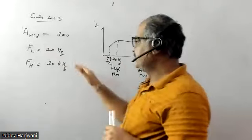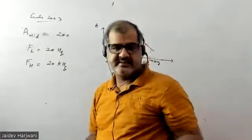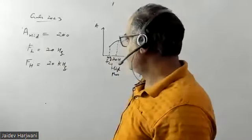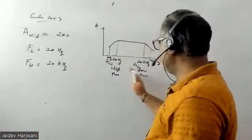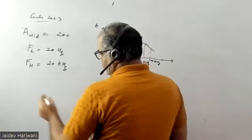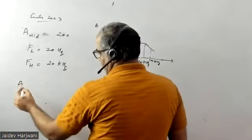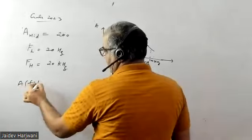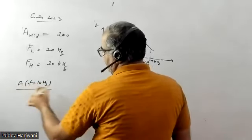As we know, the gain of the transistor depends on frequency, so this gain is constant in this range. They asked what is the ratio of gain at 10 hertz frequency to the gain at 100 kilohertz frequency.